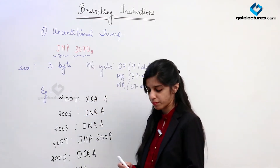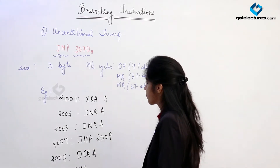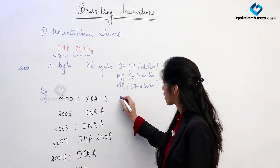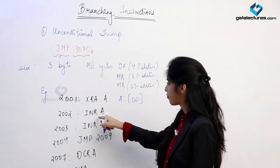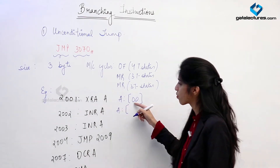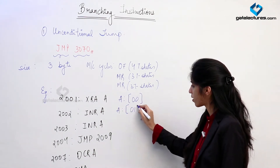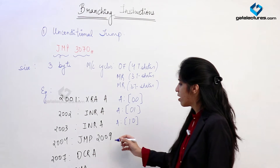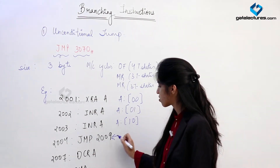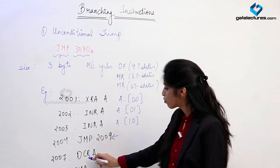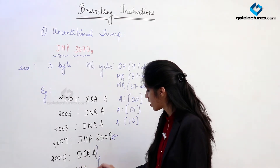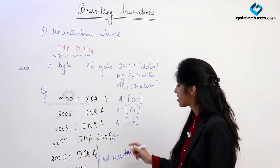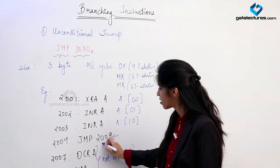HALT means end of the program. In this program, XRA A means A is XORed with its own content, so contents of A become 0. After execution of INR A, value of A increments to 1. Again incrementing A, A becomes 2. When we reach the JMP instruction, memory locations 2007 and 2008 are not going to be executed. The program counter is going to be overwritten with the jump address.